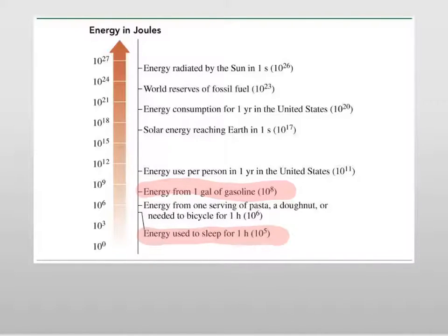You can go further. Energy used per person in one year in the United States is 10 to the eleventh joules. So, that could mean that in one year, every person is essentially using one thousand gallons of gasoline. That would be like three gallons a day. It doesn't sound like a lot. But it is a lot of energy.